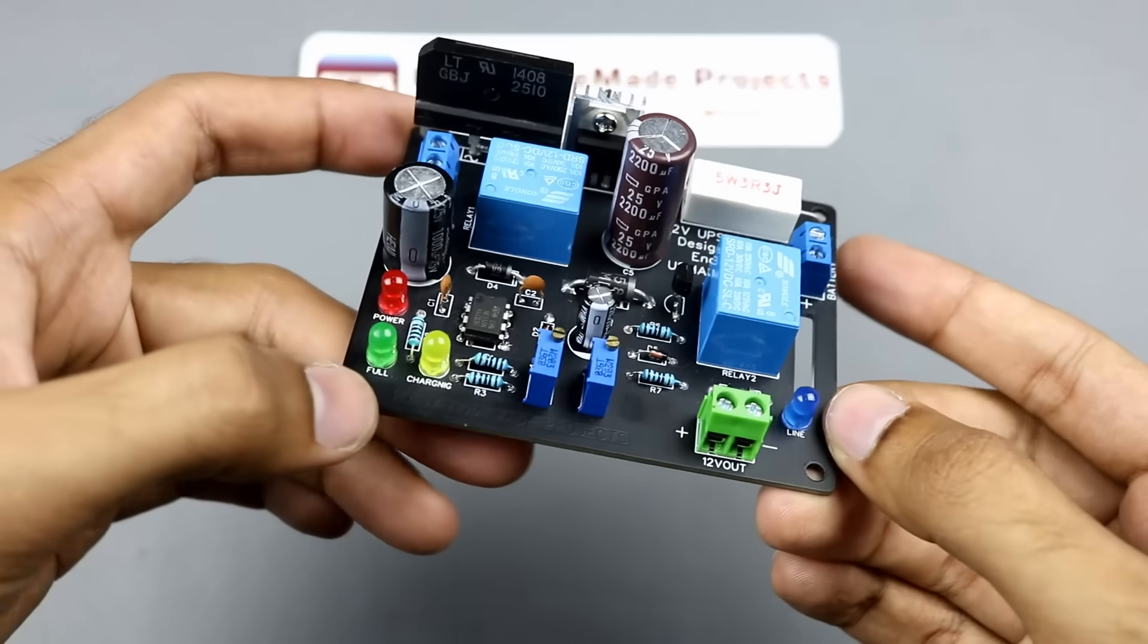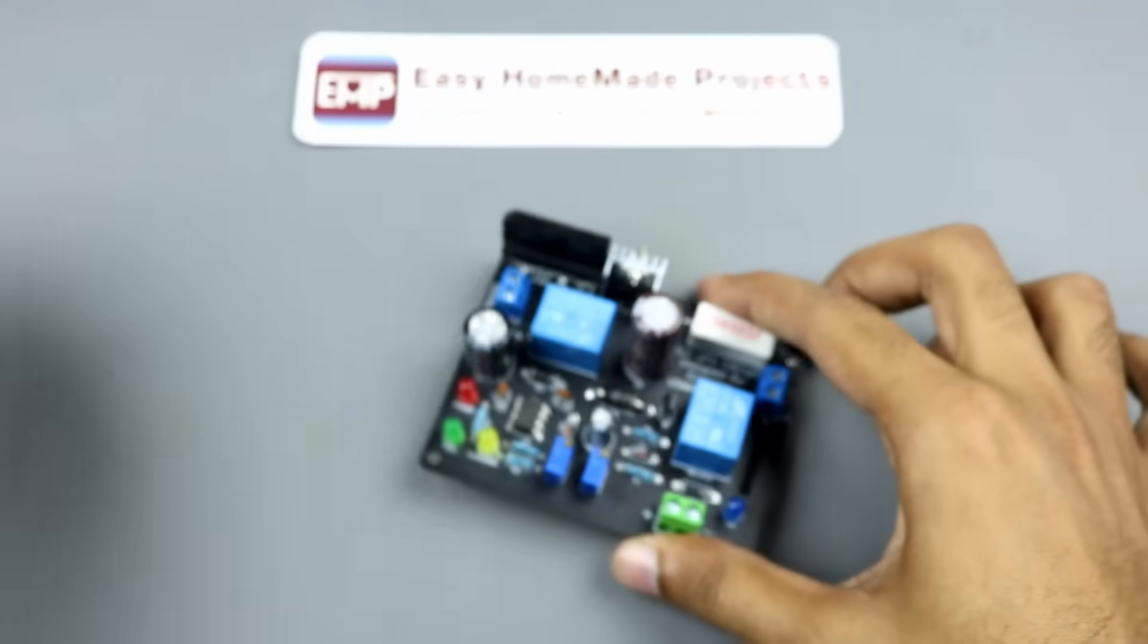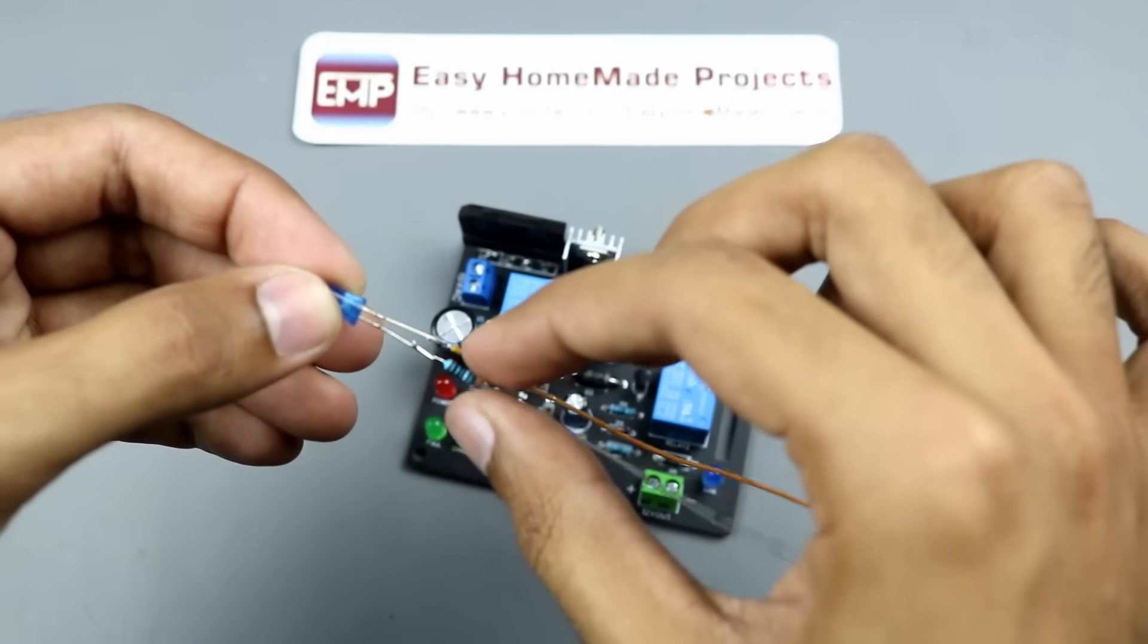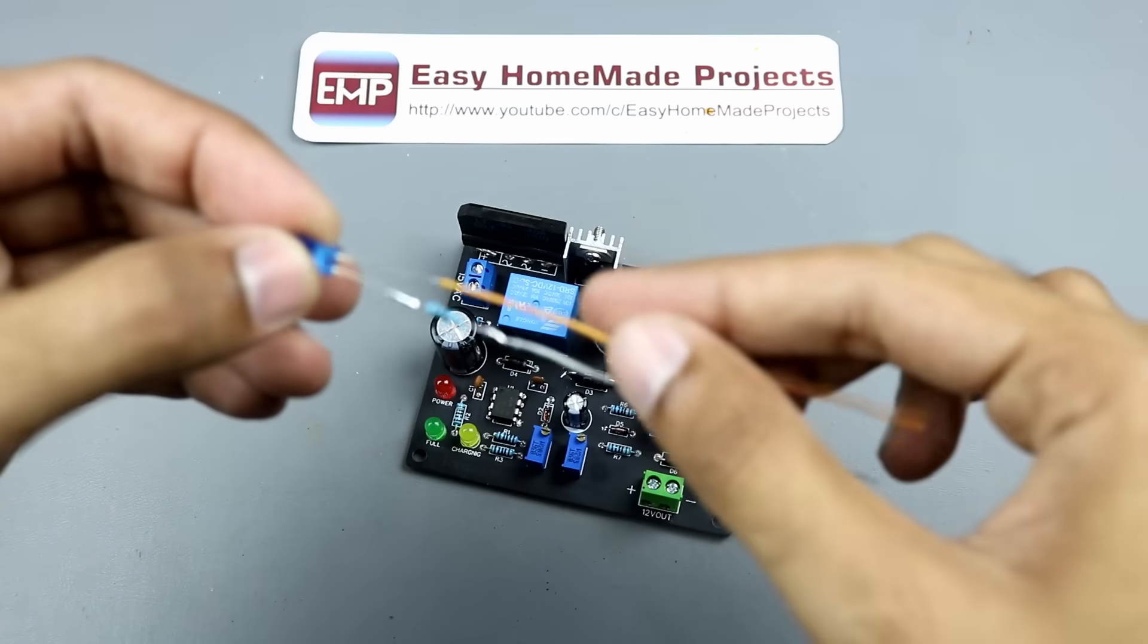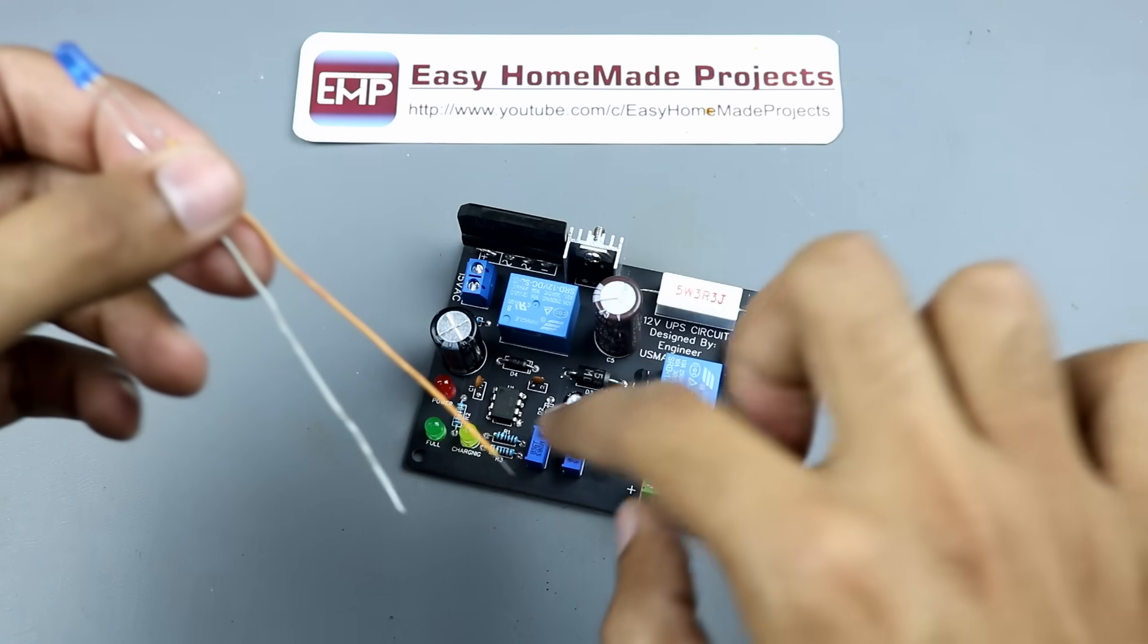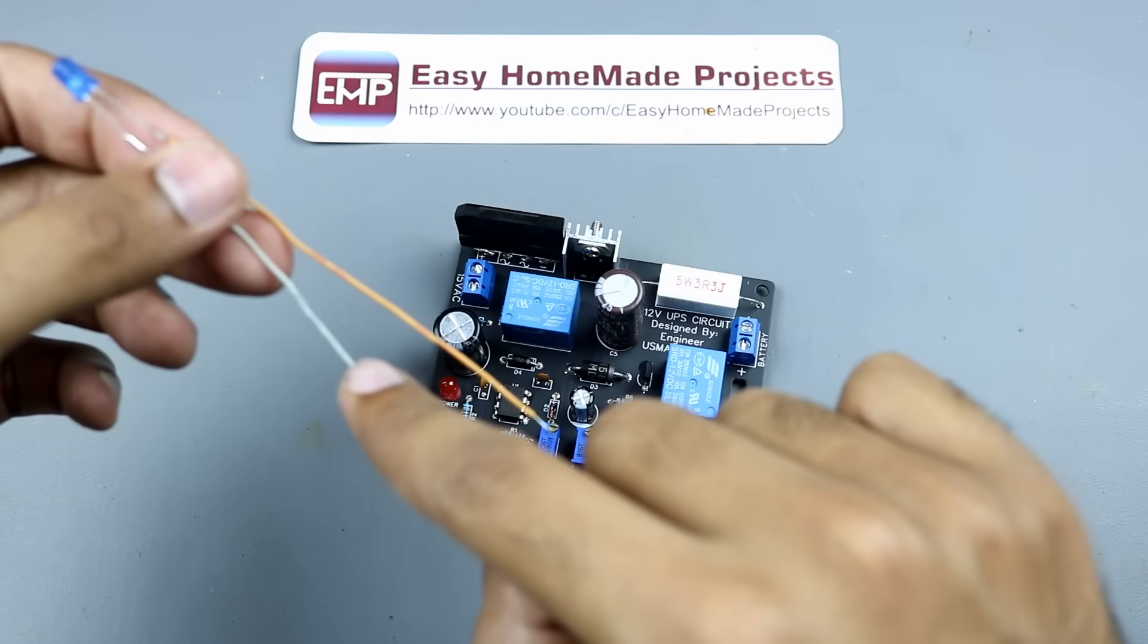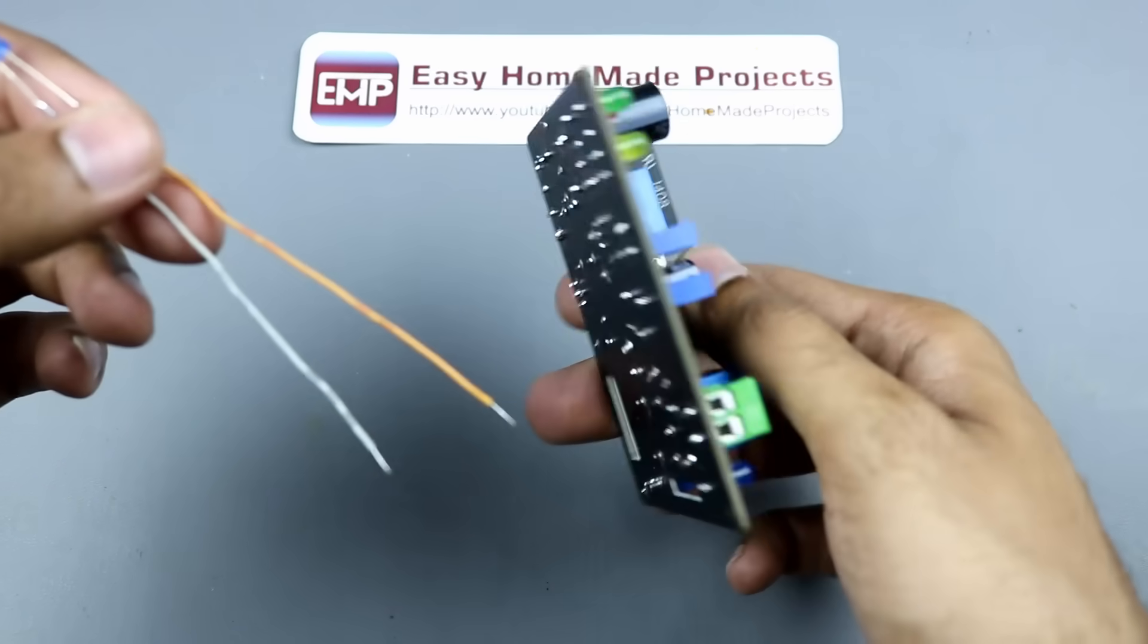Now, we will need to calibrate the circuit. For calibration, we will need an LED with 1 kOhm resistor in series. Now, connect the positive wire of the LED to pin number 3 of IC and the negative wire of the LED to the ground terminal of the circuit.